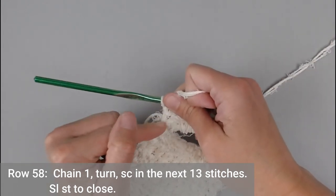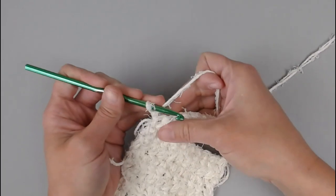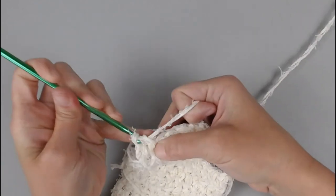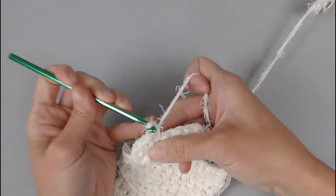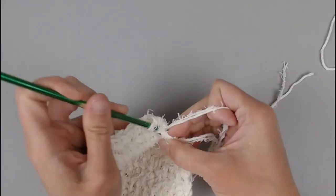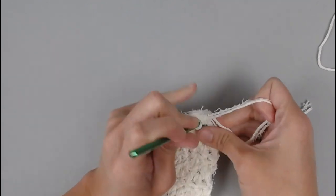We are now onto row 58, which is the very last row. Chain one. Turn our work. Now you're going to make one single crochet in the next 13 stitches. Again, that slip stitch into row 25 added a stitch. That's why it's 13 instead of 12. Slip stitch into row 25.